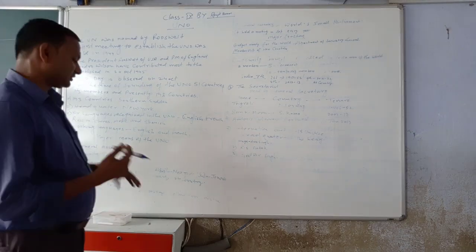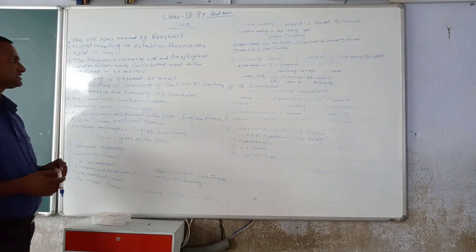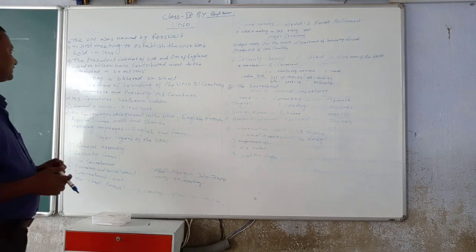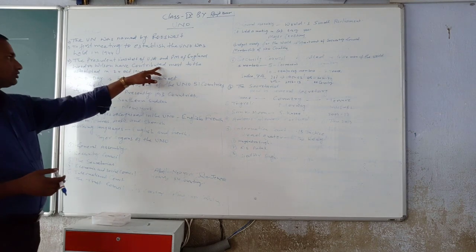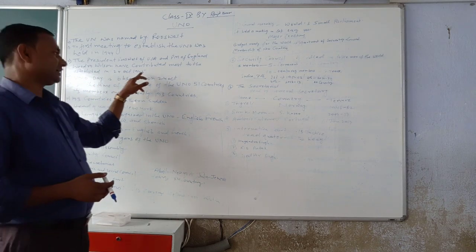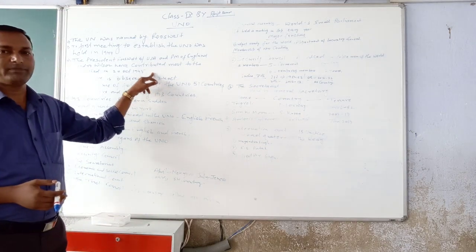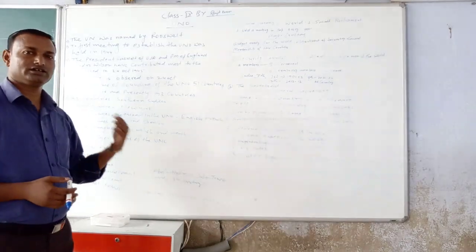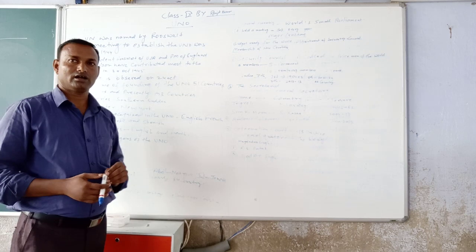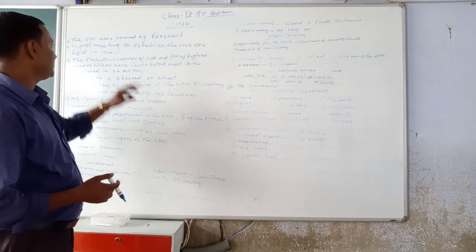You will know, after Second World War, the President of US and Prime Minister of England, Woodrow Wilson, have contributed the most to the establishment on 24 October 1945. Second World War ke baad, America ke Rashtrapati and England ke Pradhanmantri ka United Nation came, established in society. And next,